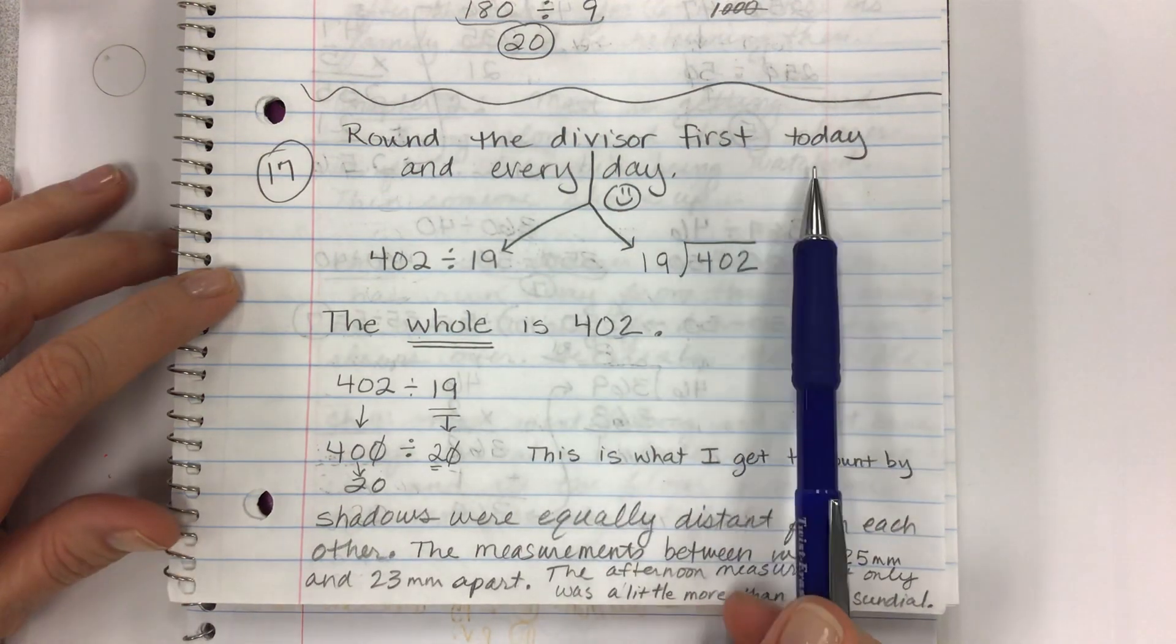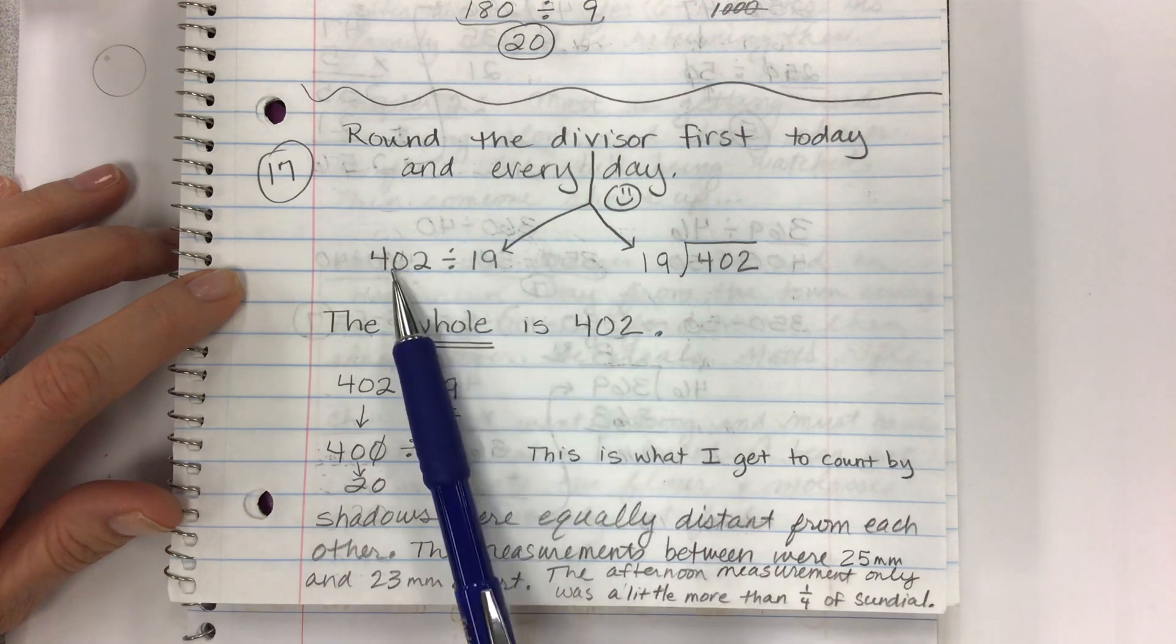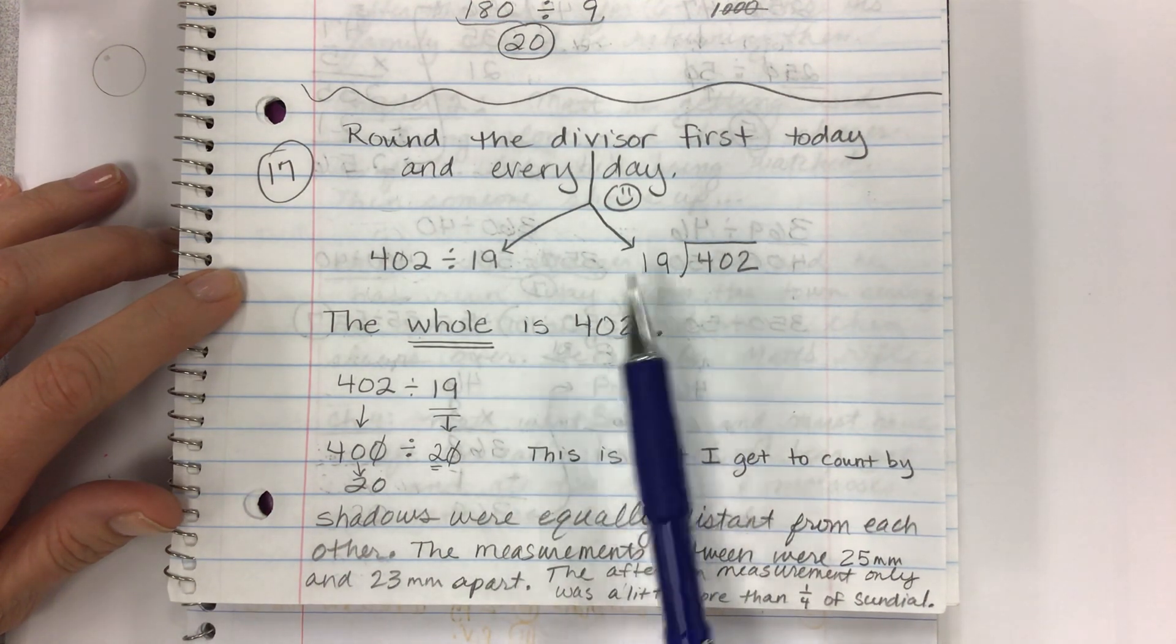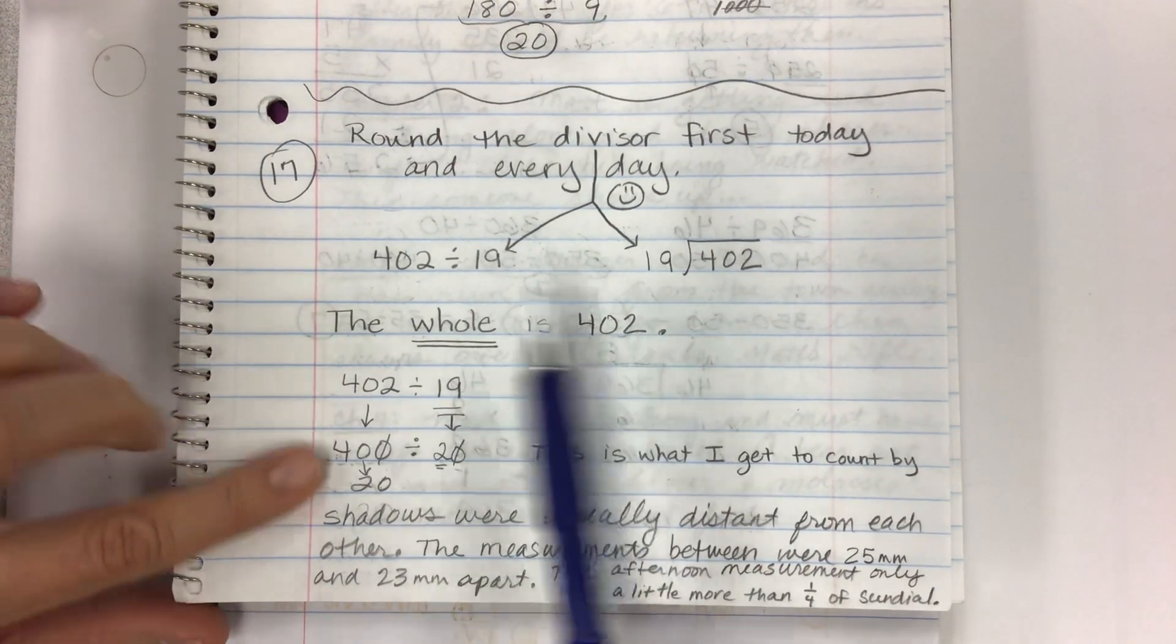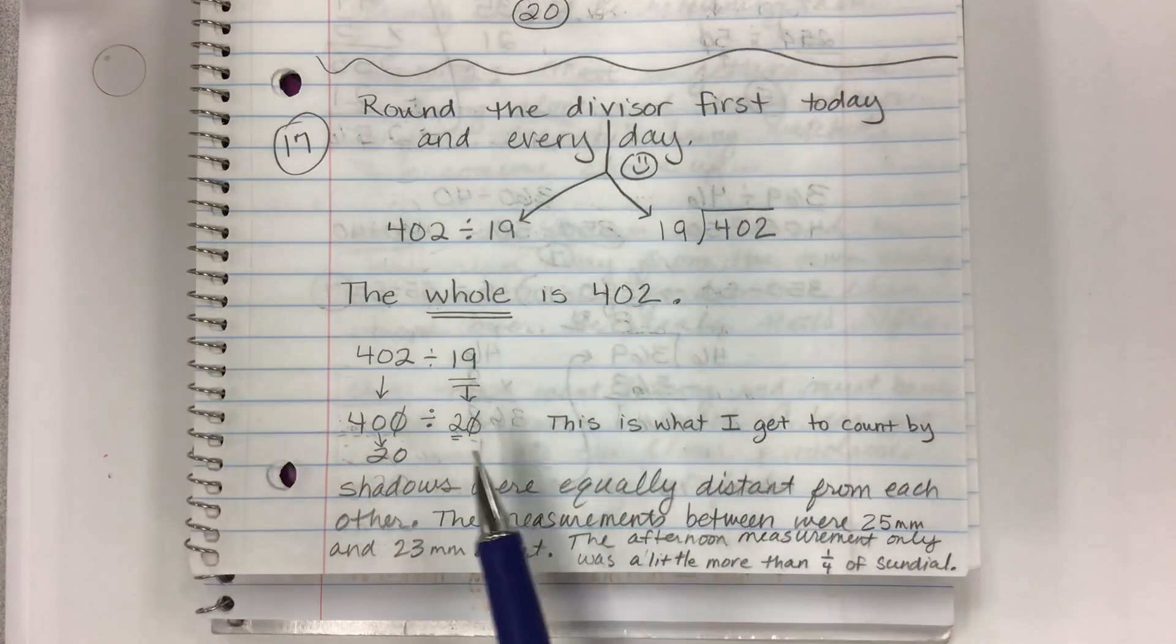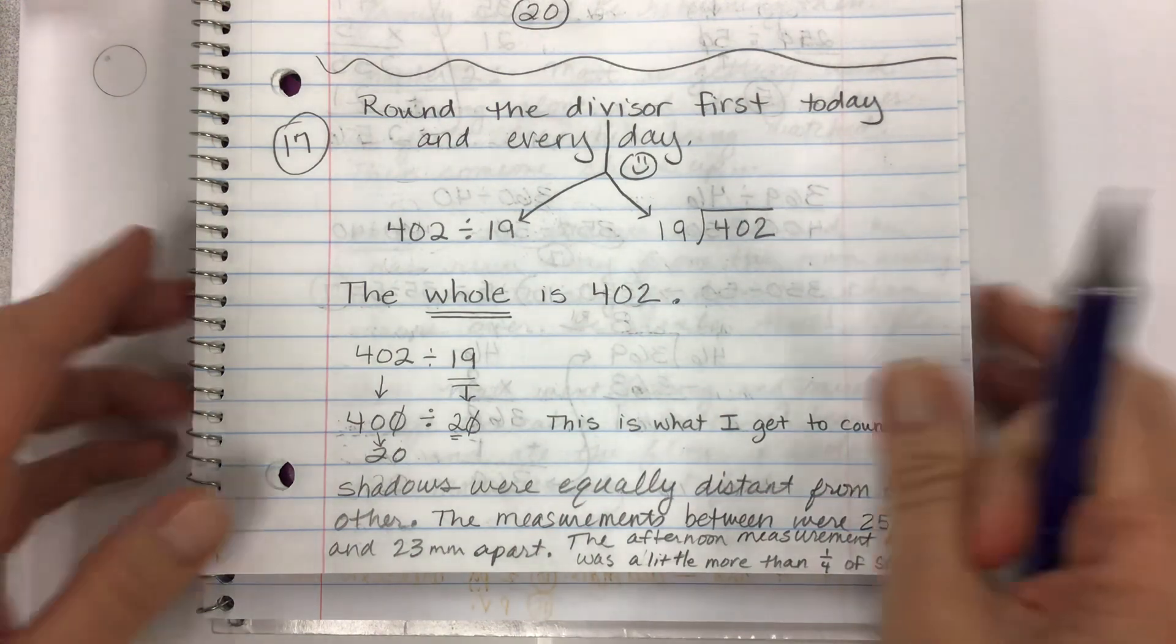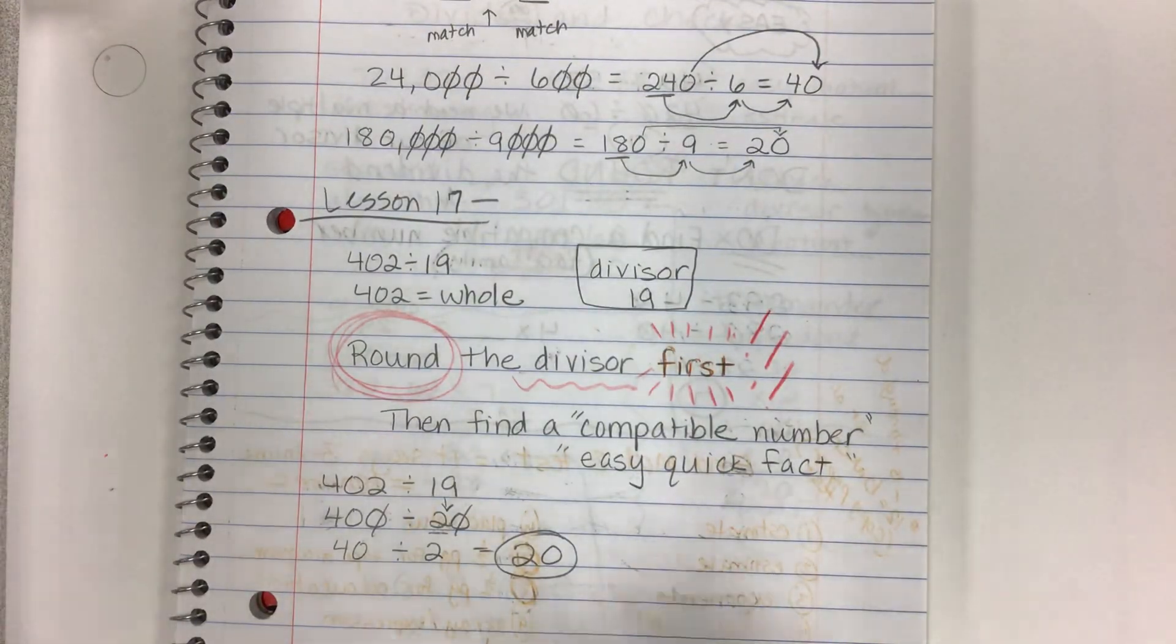So that's what Lesson 17 is all about. I also have, you can tell how important it is from another notebook, but this one even has like a different example with the bracket. Round the divisor first, today and every day, and if you do, you will be so happy. Same problem, different setup. 19 is on the outside. The whole is 402.